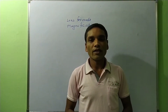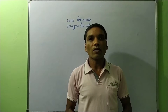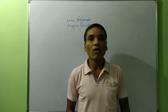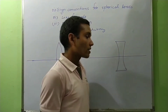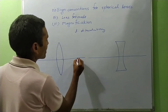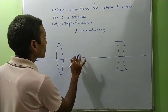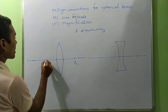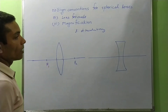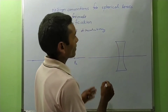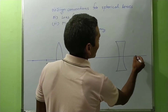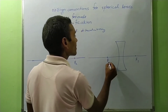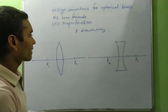In this video we will study about the lens formula and the magnification of a lens. The second principal focus of a convex lens is on the right-hand side and the first principal focus is on the left-hand side. For a concave lens, the first principal focus is on the right-hand side and the second principal focus is on the left-hand side.